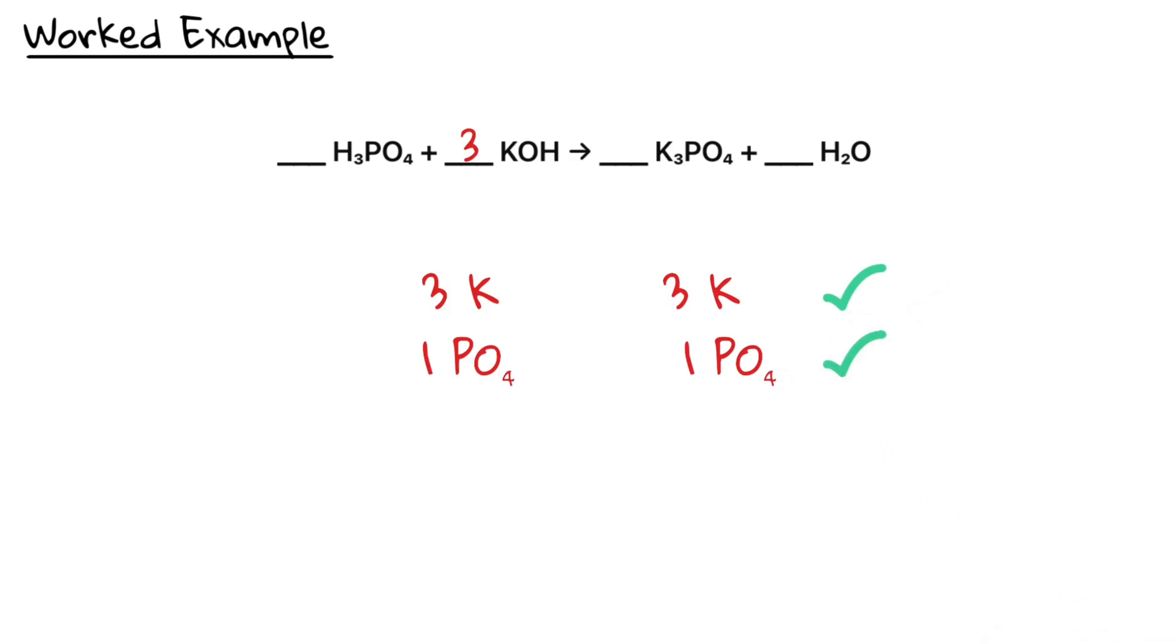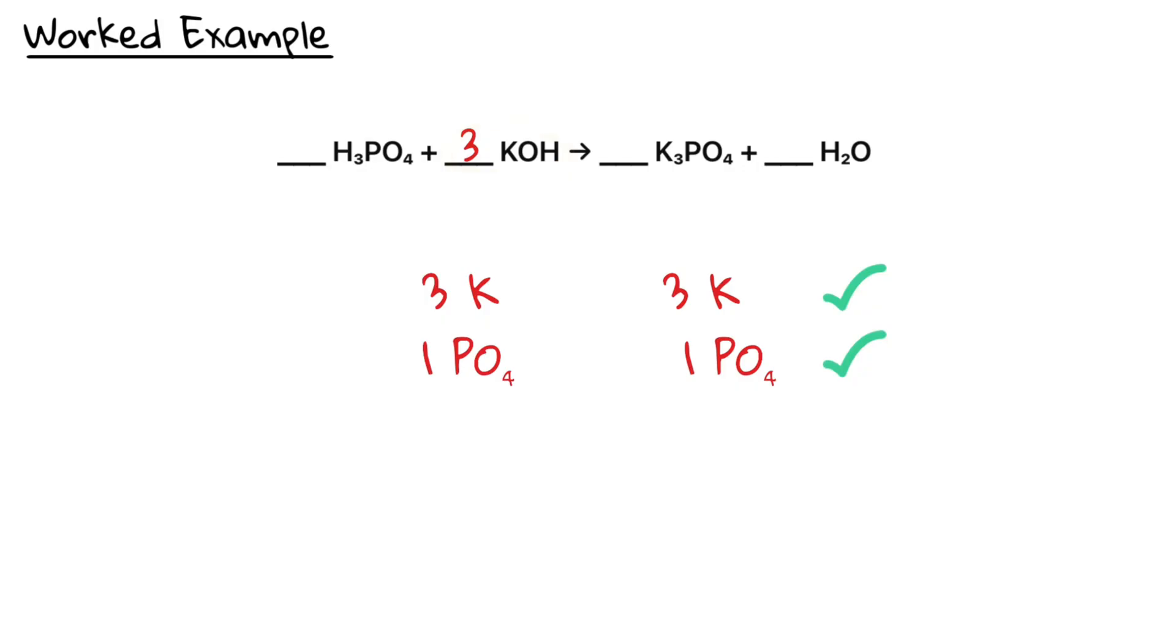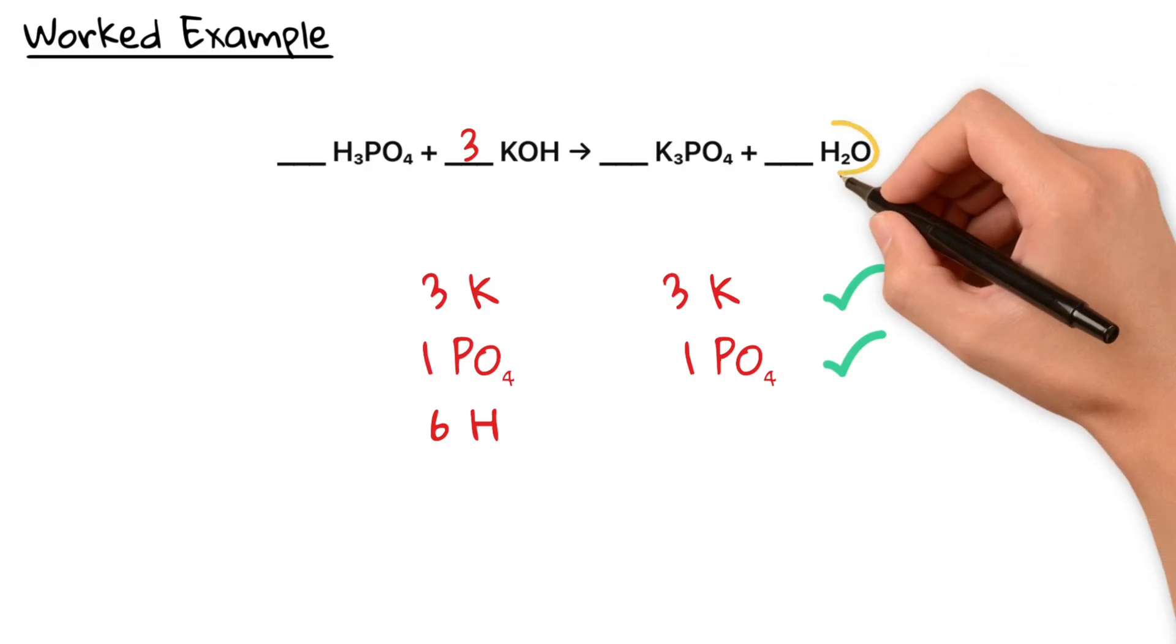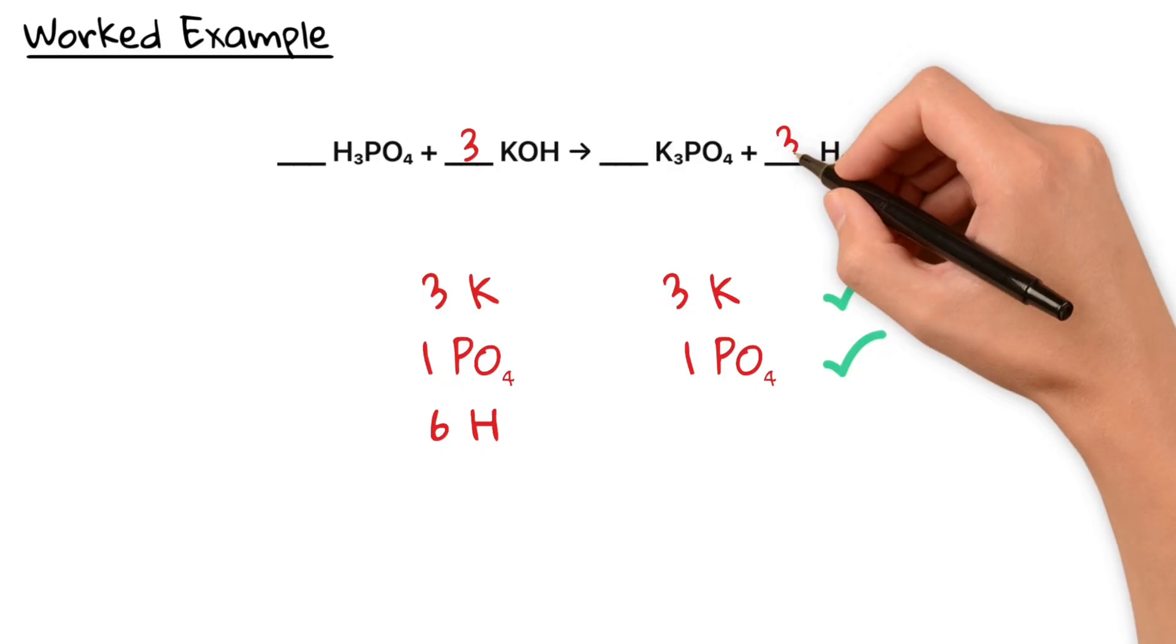Now we take a look at hydrogen. H3PO4 has three hydrogens and 3KOH also have three hydrogens. That makes for a total of six hydrogens on the left hand side. We need six hydrogens on the right. And since water has two hydrogens per molecule, we need three water.